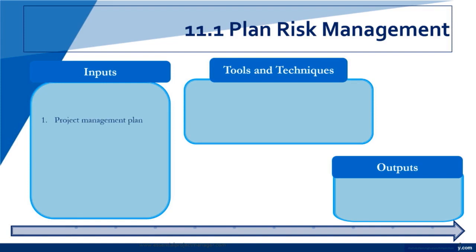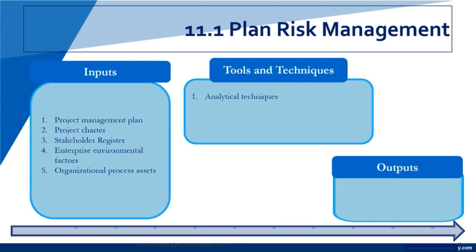There are seven different processes that we've identified as part of this knowledge area. We plan risk management, identify the risks, perform qualitative risk analysis, and perform quantitative risk analysis. We plan the risk response, and new to this particular version is implement risk response. Then we control risks as part of the monitoring and controlling process group.